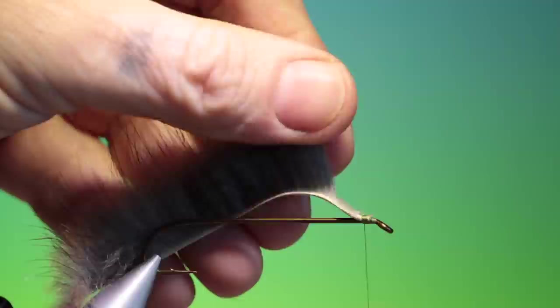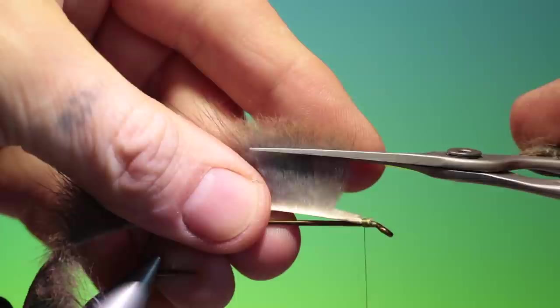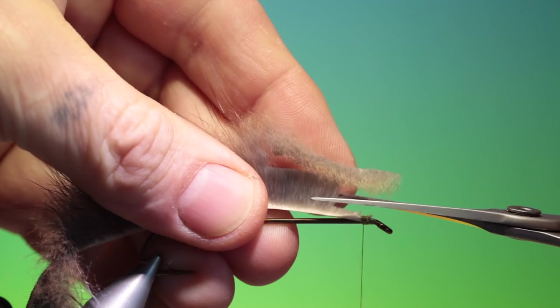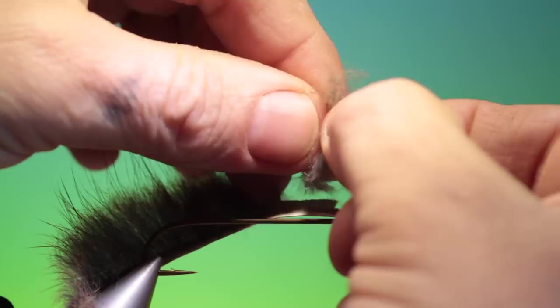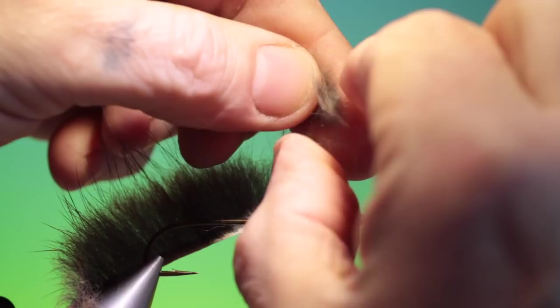Now if you want a little coarser, rougher dubbing, what you can do is you can cut this in shorter hairs, like so. And we mix this by pulling it from each other and putting it on top like that.